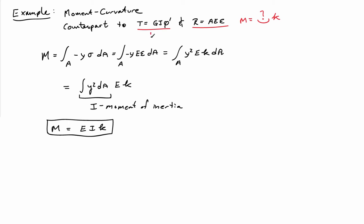That's the counterpart to T is equal to GJ phi prime, or R is equal to AE epsilon. That serves the same place in the theory of the bending of beams as those other relationships did in torsion and axial loads.